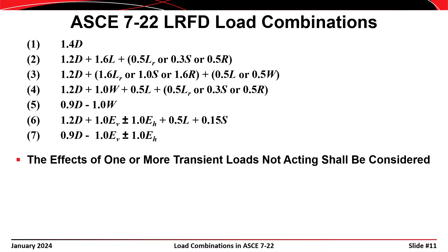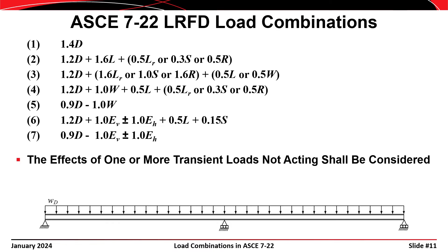We also have to consider the possibility that in some cases it can be more critical if one or more of the transient or environmental loads aren't acting on the structure. Consider a two-span beam with a uniformly distributed dead load, which leads to positive moment near the middle of each span and negative moment over the center support. If we apply live load as two point loads in each span and have all four loads acting, that yields maximum negative moment over the center support — but it isn't the most critical case for positive moment. Applying only the two live loads in the first span leads to a larger positive moment in that span.